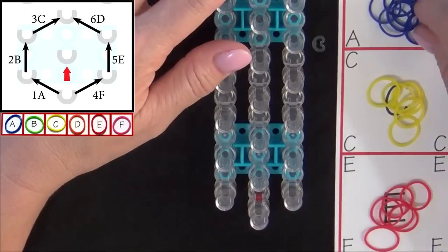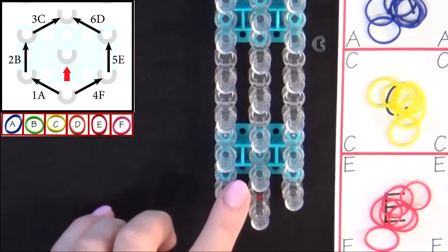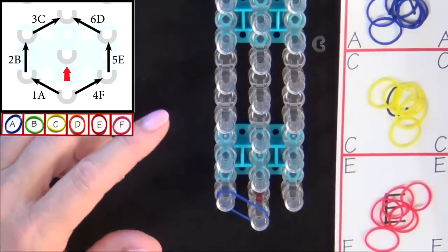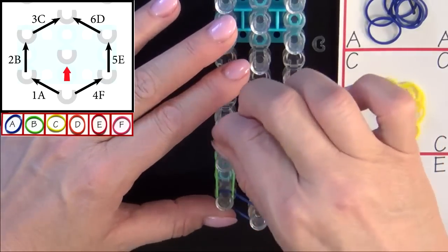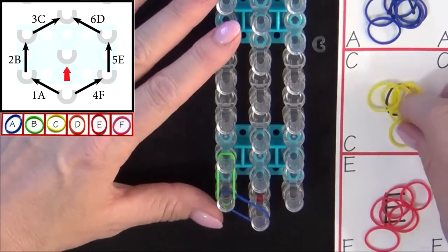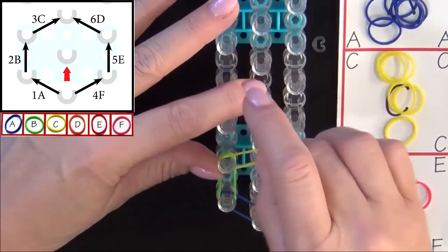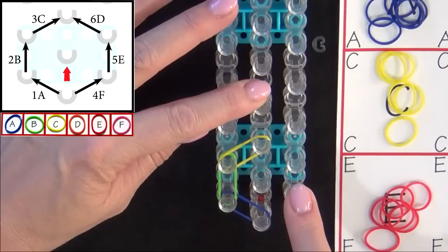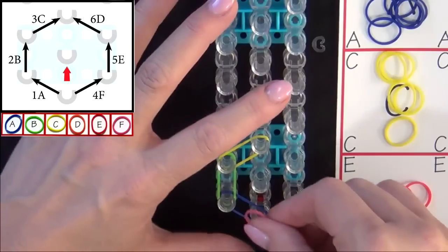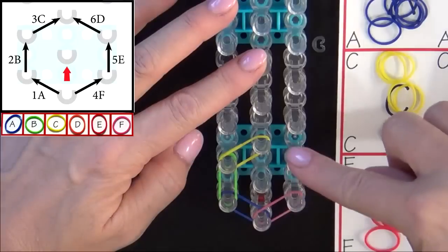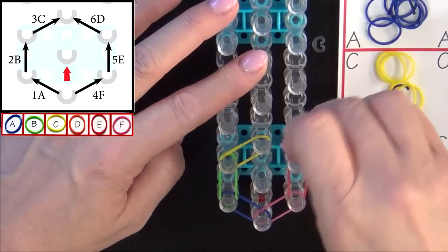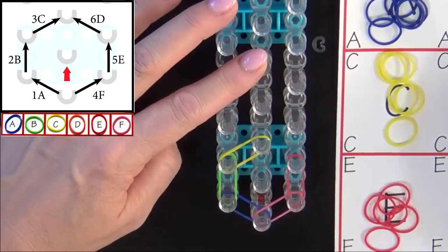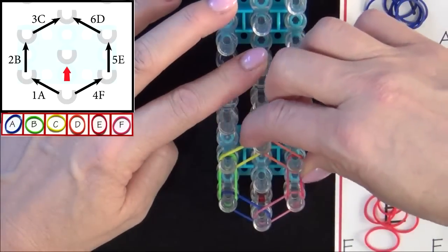You'll start from the middle pin and the first band that you place will be 1 A. You'll be using your A colored band. Next, you'll place 2 B. That goes up the side of the loom. And 3 C will turn into the center. Then you go back to the first pin and you'll place 4 F, 5 E, and 6 D. And push those down.